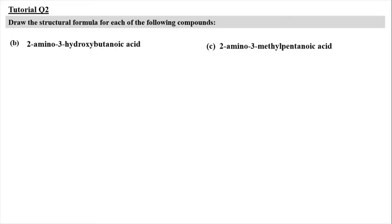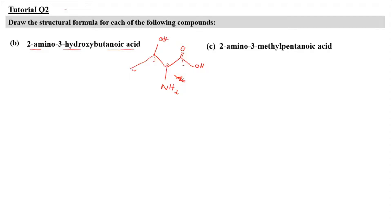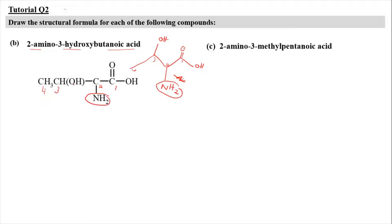Moving on to tutorial question 2, we have to draw the structural formula for given compounds. For question 2b, we have 2-amino-3-hydroxybutanoic acid. Butanoic acid has 4 carbons: 1, 2, 3, and 4. Carbon 1 has the carboxyl group. At carbon number 2, we attach an NH2 group. At carbon number 3, we attach a hydroxyl group. So this is 2-amino-3-hydroxybutanoic acid, which can be drawn as a structural or expanded formula.